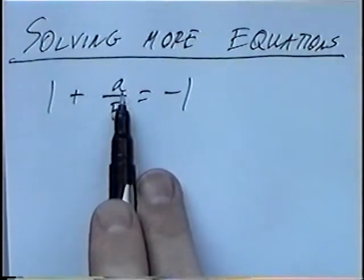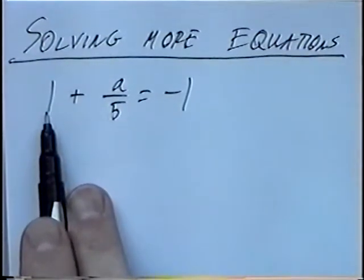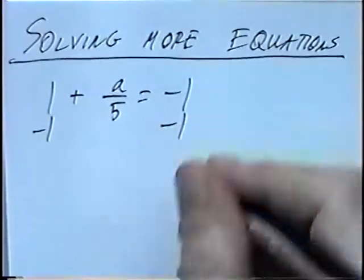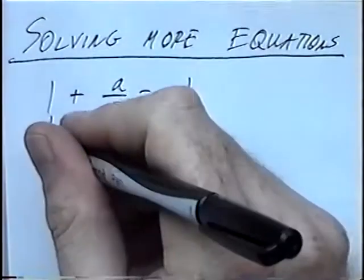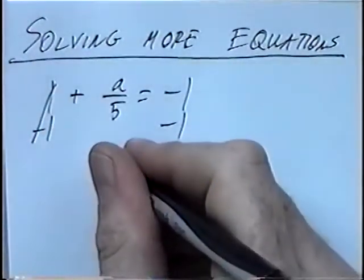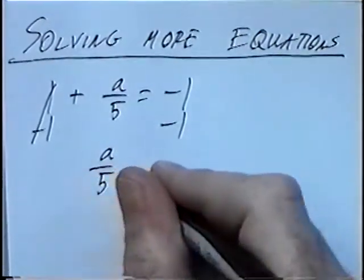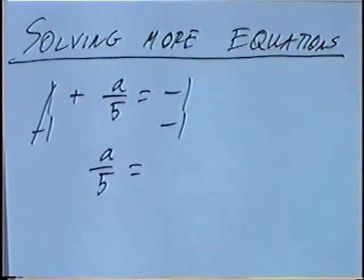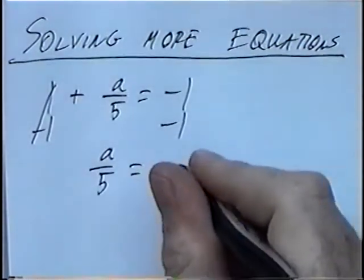a again would stay on the left side, we want to get rid of this positive 1, the opposite of positive 1 or adding 1 would be minus 1. 1 minus 1 would cancel out, a over 5 would stay the same, and negative 1 minus 1 would be negative 2.